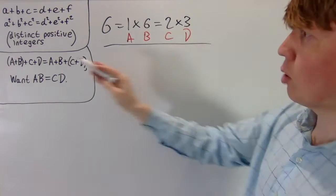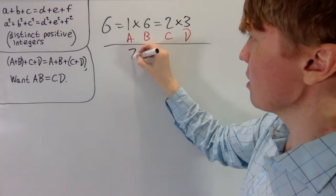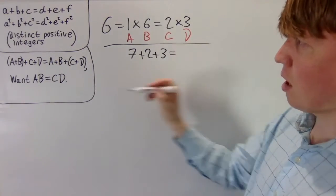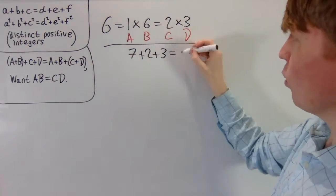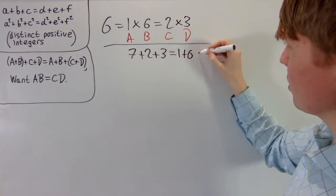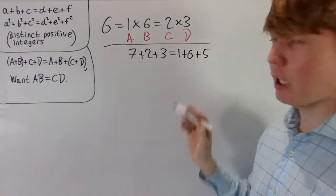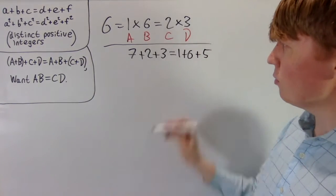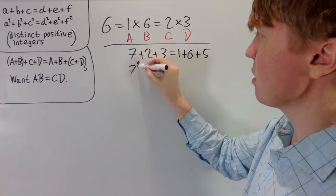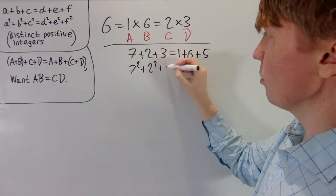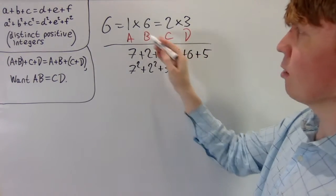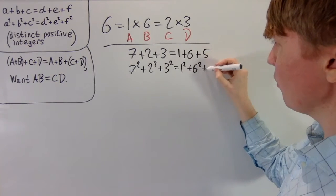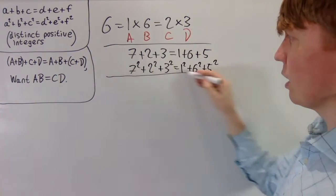Let's verify: a+b = 1+6 = 7, plus c=2 and d=3. And for the other grouping: a+b = 7, and c+d = 5. So rearranging, this is actually our example from the start of the video. We don't even need to verify the squares are equal separately because we've already done the algebra — we know ab equals cd, so it works.